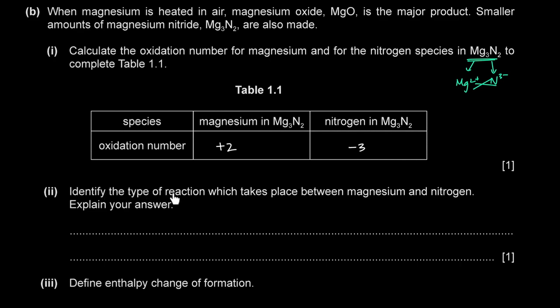Identify the type of reaction which takes place between magnesium and nitrogen, and explain your answer. This is a redox reaction. Elemental magnesium reacts with nitrogen to form magnesium nitride, Mg₃N₂. The equation is: 3Mg + N₂ → Mg₃N₂. Since both magnesium and nitrogen in the reactants are in their elemental form, they have an oxidation number of 0.